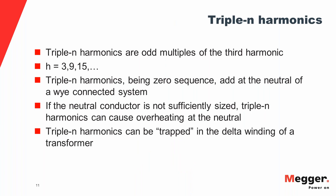Triple N harmonics are odd multiples of the third harmonic: third, ninth, fifteenth. Triple N harmonics are zero-sequence harmonics, though not all zero-sequence harmonics are triple N harmonics. Triple N harmonics, being zero-sequence, add at the neutral of a Y-connected system. Because they are zero-sequence on a three-phase system, the currents flowing through the A, B, and C phases have no phase angle difference between them — they are in phase. When they converge at the neutral, they add up, resulting in a large total current flowing through the neutral conductor.